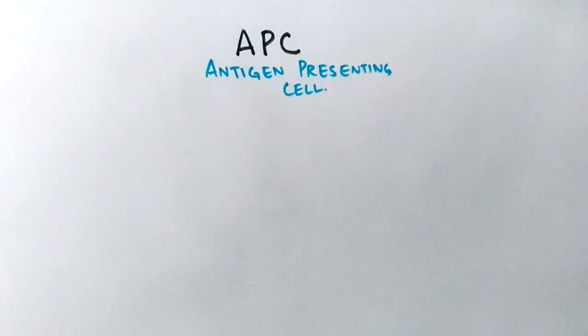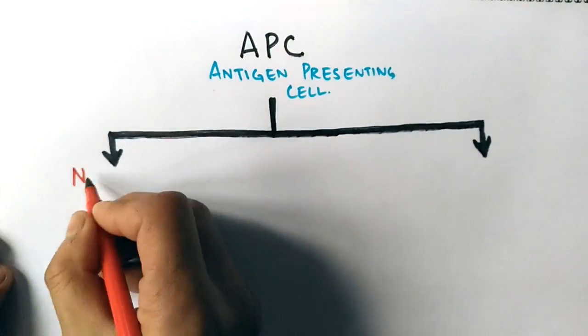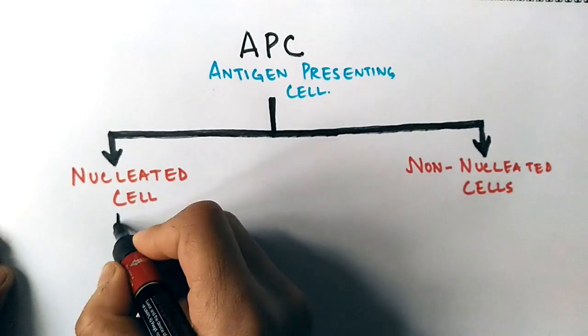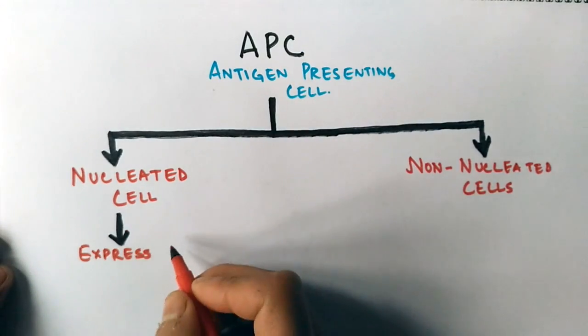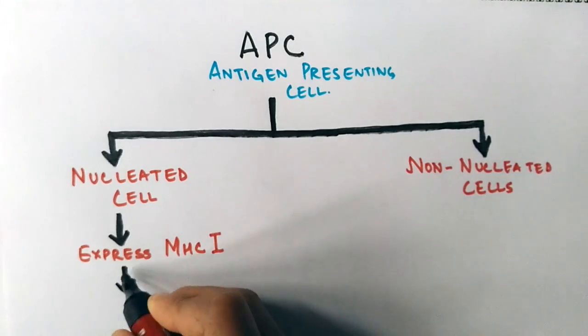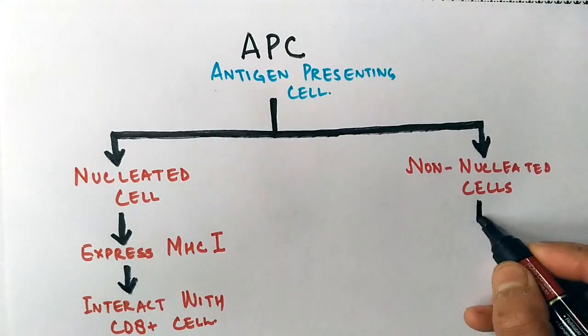Antigen presenting cells are of two types. First one is nucleated cell, second is non-nucleated cells. Nucleated cells express MHC1 on their surface and they interact with CD8 positive cell only.